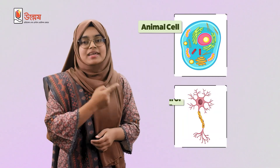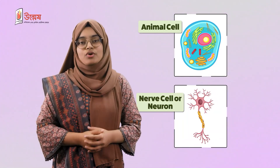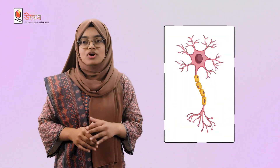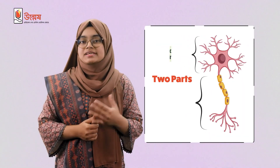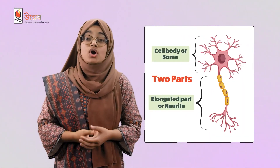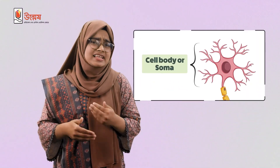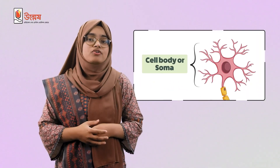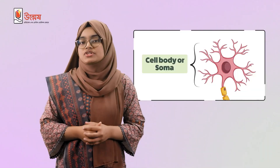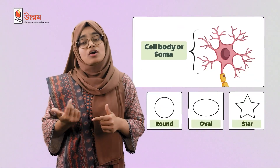Now let's discuss about the structure of the neuron. As it is a special type of cell specific for the nervous system, its structure is also different from a typical cell. Here you can see this is a typical animal cell and this is a nerve cell or neuron. The neuron is made up of two parts: cell body or soma, and elongated part or neurite. The cell body can be considered as the main part of the neuron, which can be of different shapes like round, oval, or star shape.